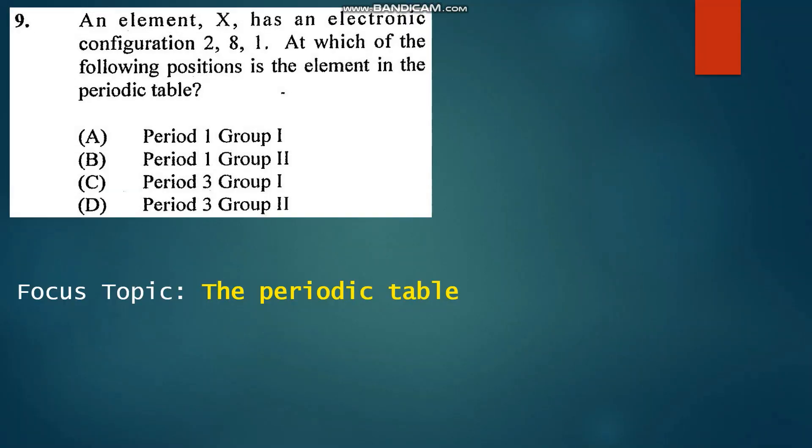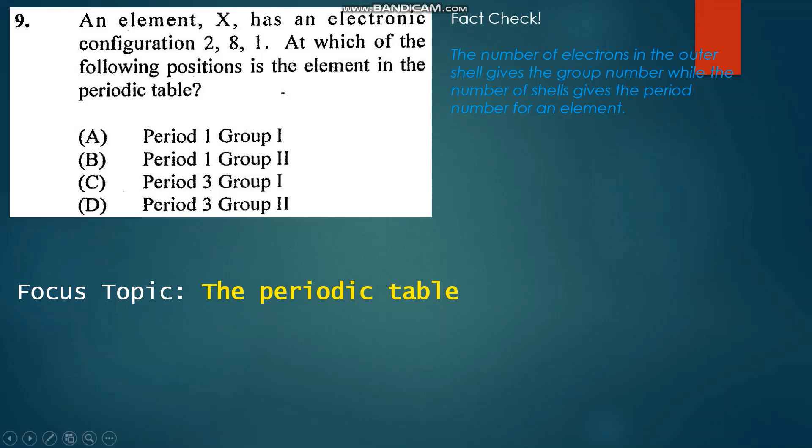Number nine: An element X has an electronic configuration 2, 8, 1. At which of the following positions is the element in the periodic table? The number of electrons in the outer shell can tell us which group the element is in. We have one electron in the outer shell, meaning that element would be in group one. And we have one, two, three shells, so that element is also in period three. The answer would be group one and period three, which is C.